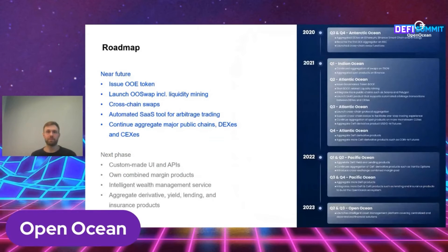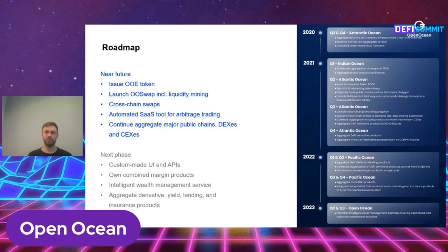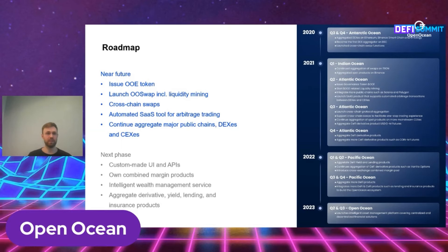This is our roadmap. Some exciting things coming up in the near future: we will launch our own token this month. We also launched our own proprietary DEX called OOSwap with liquidity mining programs. We will very soon launch cross-chain swaps via cross-chain protocols and bridges, and we will also launch our automated SaaS tool for arbitrage trading. We will continue to aggregate major public chains, decentralized and centralized exchanges, and offer custom-made UIs and APIs for institutional and retail investors, combined margin products, intelligent wealth management services, and more sophisticated product aggregations.